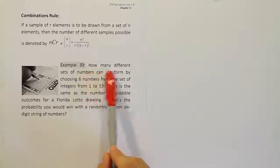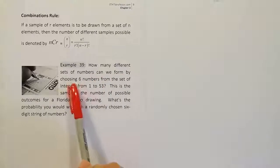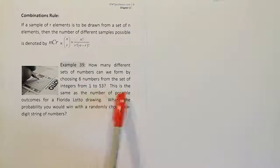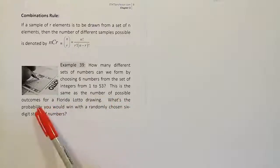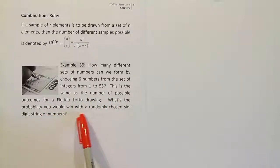Example 39. How many different sets of numbers can we form by choosing six numbers from the set of integers from 1 to 53? This is the same as the number of possible outcomes for a Florida Lotto drawing. What's the probability you would win with a randomly chosen six-digit string of numbers?